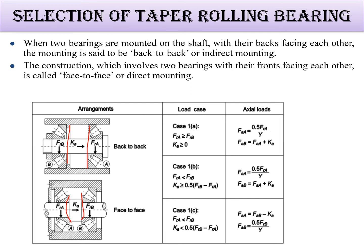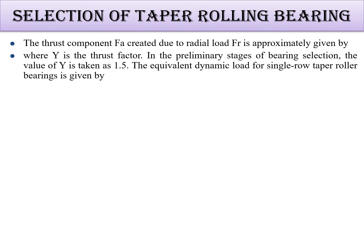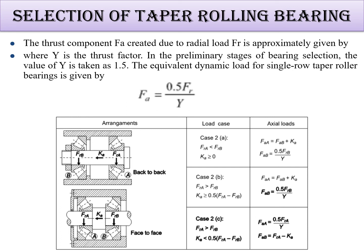For the load cases: Case 1 — when Fr_A is greater than or equal to Fr_B, the axial load is 0.5·Fr_A divided by Y. Case 2 — when Fr_A is less than Fr_B. Case 3 — when Fr_A is less than Fr_B and Ka is less than 0.5. If axial load creates a radial component, the value of Y is taken as 1.5. In the preliminary stage of bearing selection, Y equals 1.5, as shown in the table for both back-to-back and face-to-face arrangements.